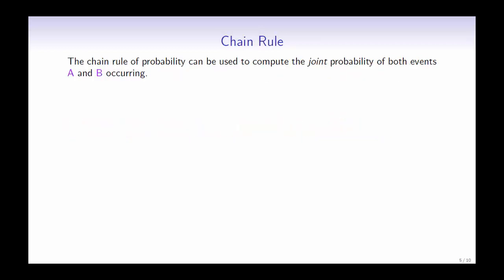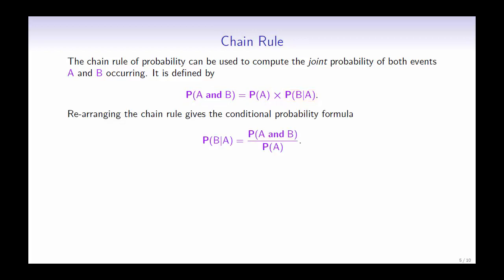Now let's have a look at the chain rule, which can be used to compute the joint probability of both A and B occurring. The probability of A and B is the probability of A multiplied by the probability of B given that A occurs. Rearranging this equation, we have the formula for the conditional probability.